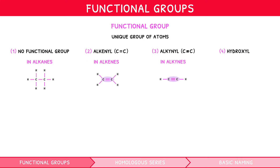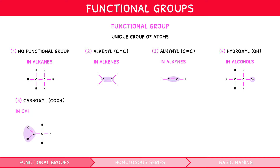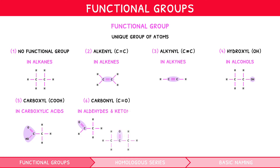Hydroxyl, i.e. a carbon-OH group, is found in alcohols. Carboxyl, i.e. a COOH group, is found in carboxylic acids. Carbonyl, i.e. a C double bond O, is found in aldehydes and ketones, with their difference being the position of the group.